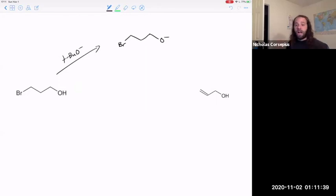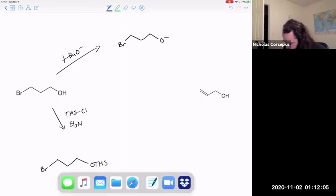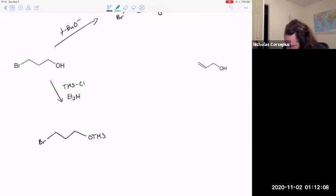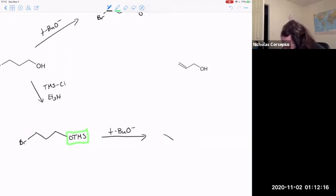However, I can do an elimination selectively if I first protect that alcohol group. So what I do first is add in my TMS chloride along with the triethylamine solvent. I'll get this molecule here which now has this protected alcohol group. Now I can add in tert-butoxide in order to get my elimination product.